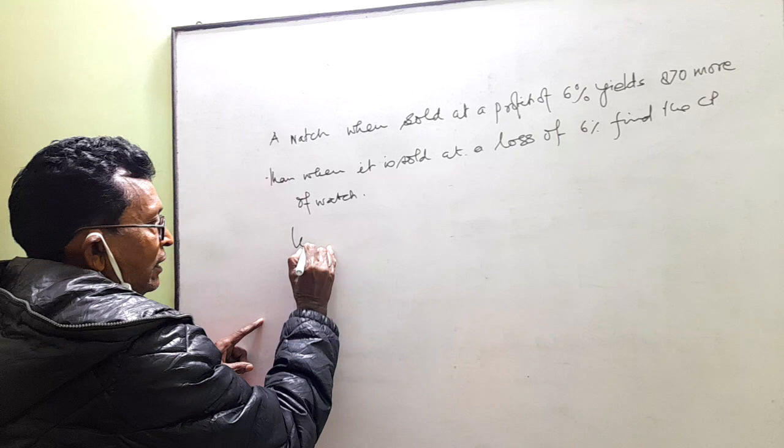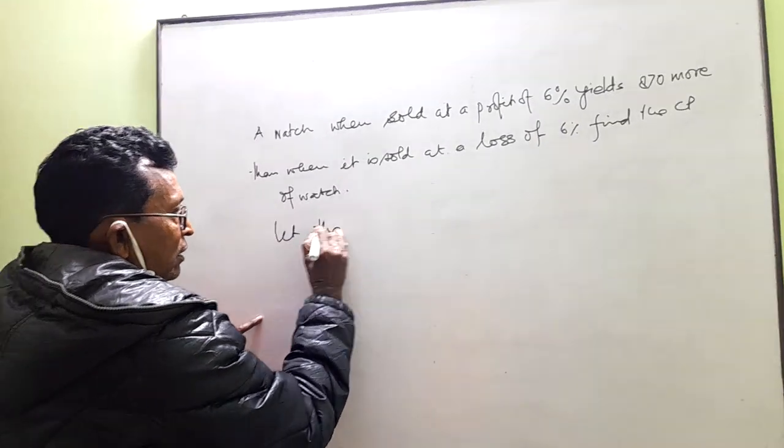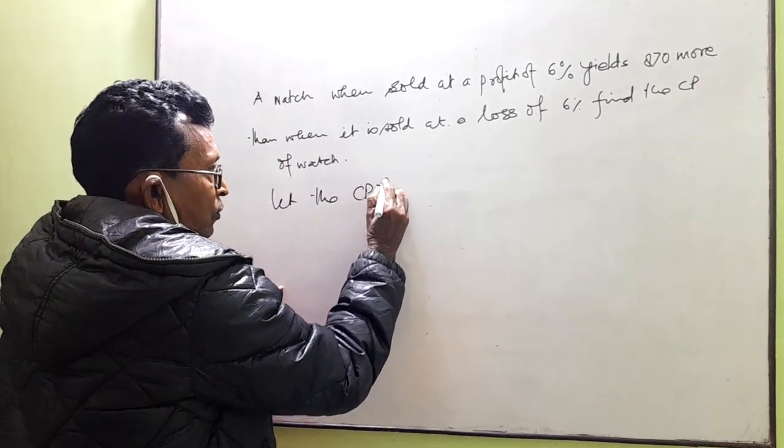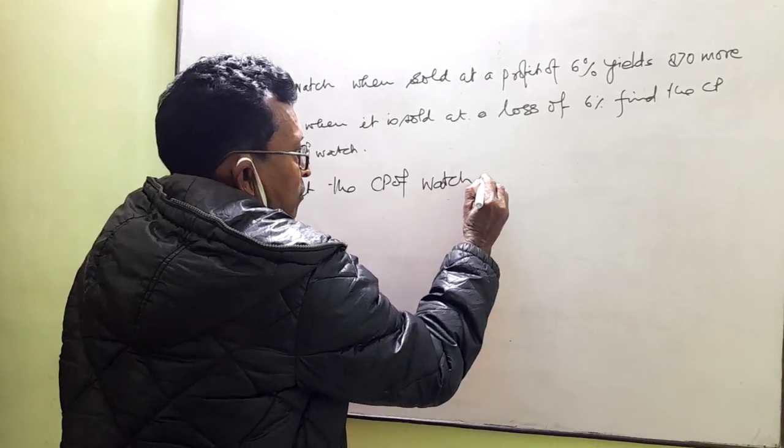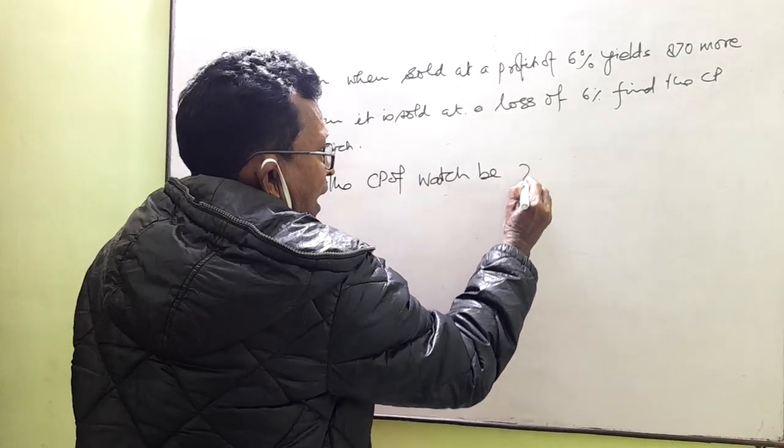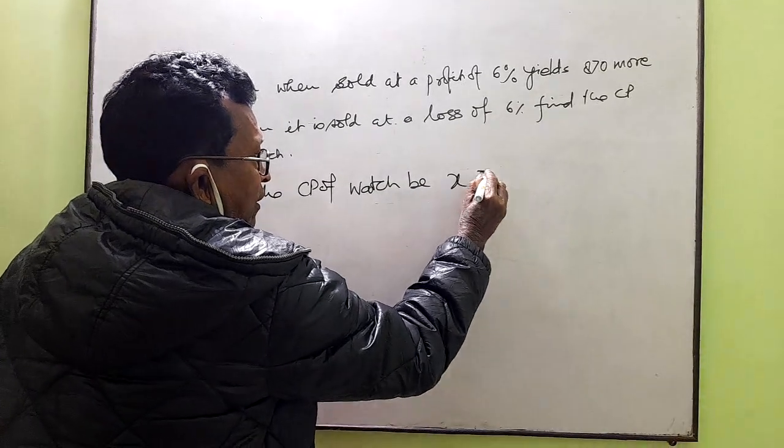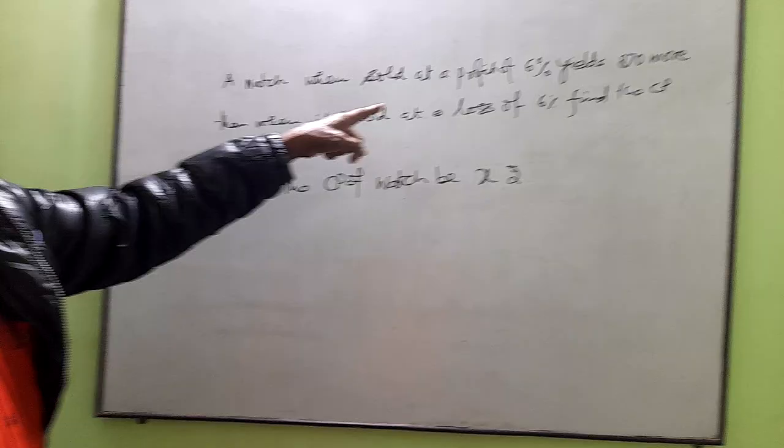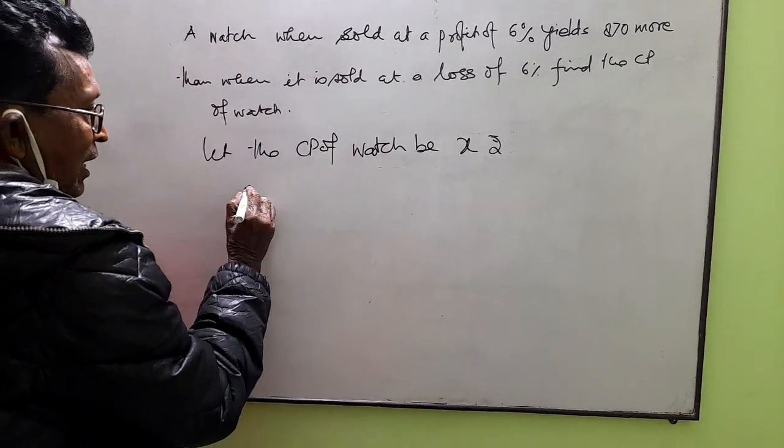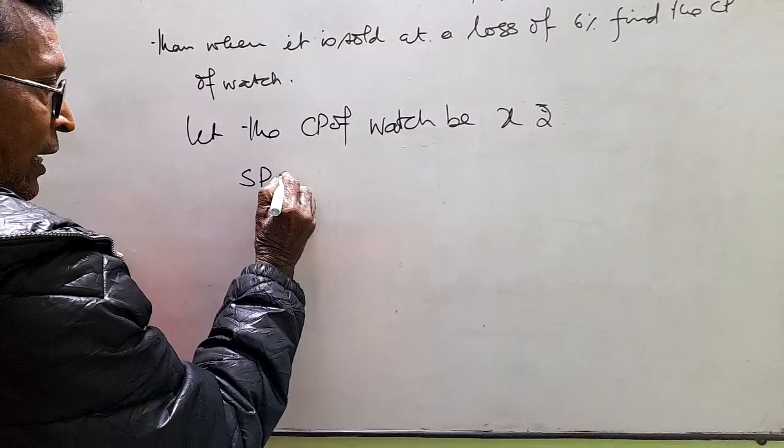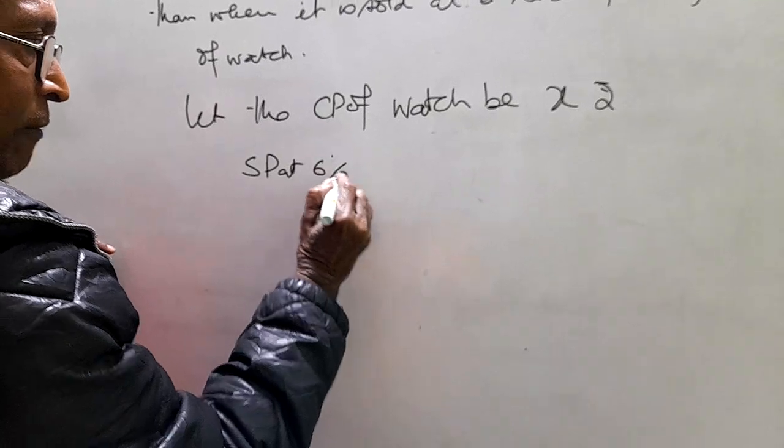So let the CP of watch be x. SP at 6% profit.